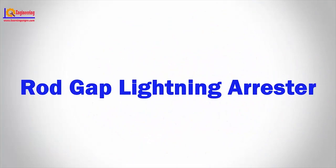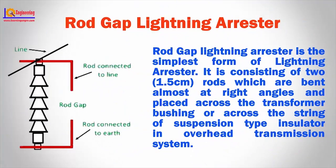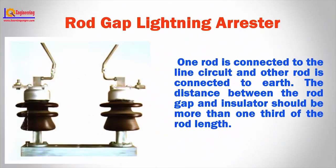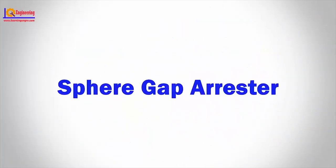Rod gap lightning arrester is the simplest form of lightning arrester. It consists of two rods which are bent almost at right angles and placed across the transformer bushing or across the string of suspension type insulator in overhead transmission system. One rod is connected to the line circuit and the other rod is connected to earth. The distance between the rod gap and insulator should be more than one-third of the rod length.